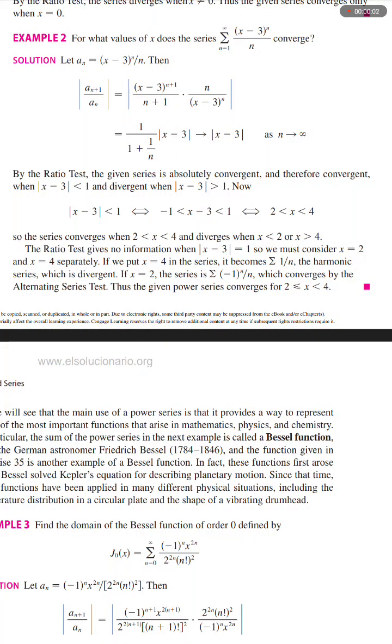Example 2: For what values of x does the series, the sum of n equals 1 to infinity of (x-3)^n over n, converge?